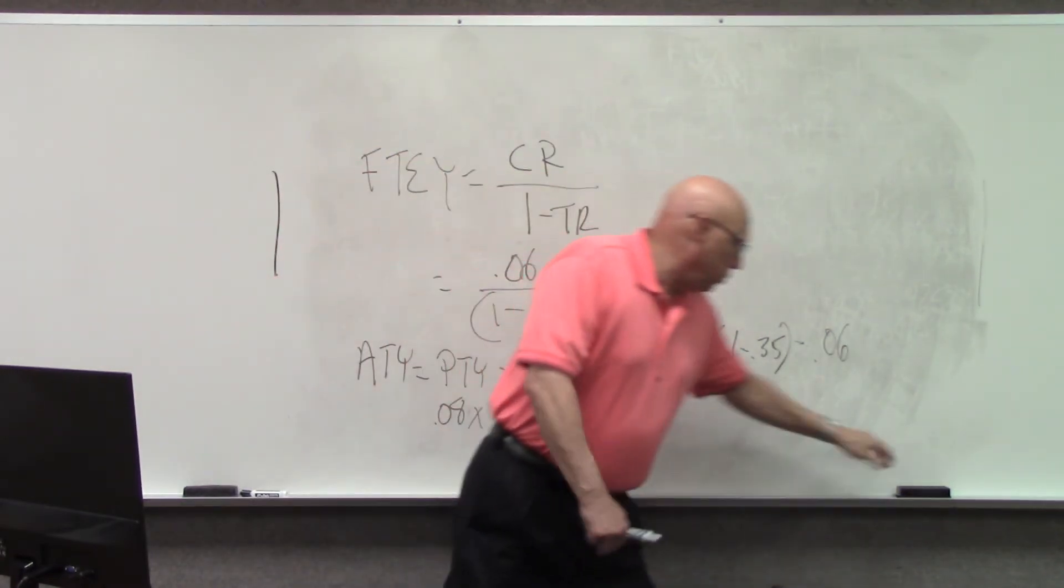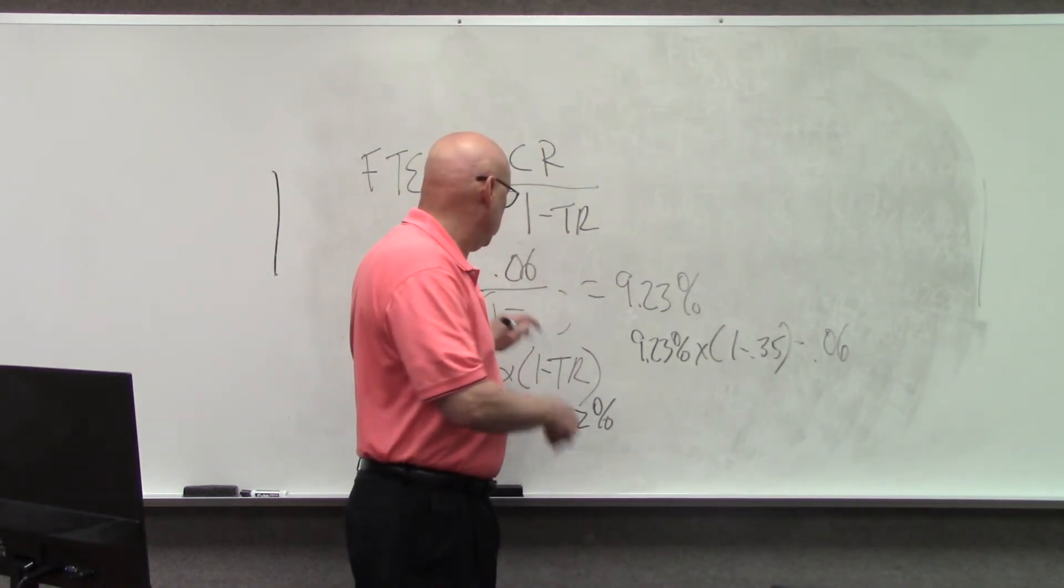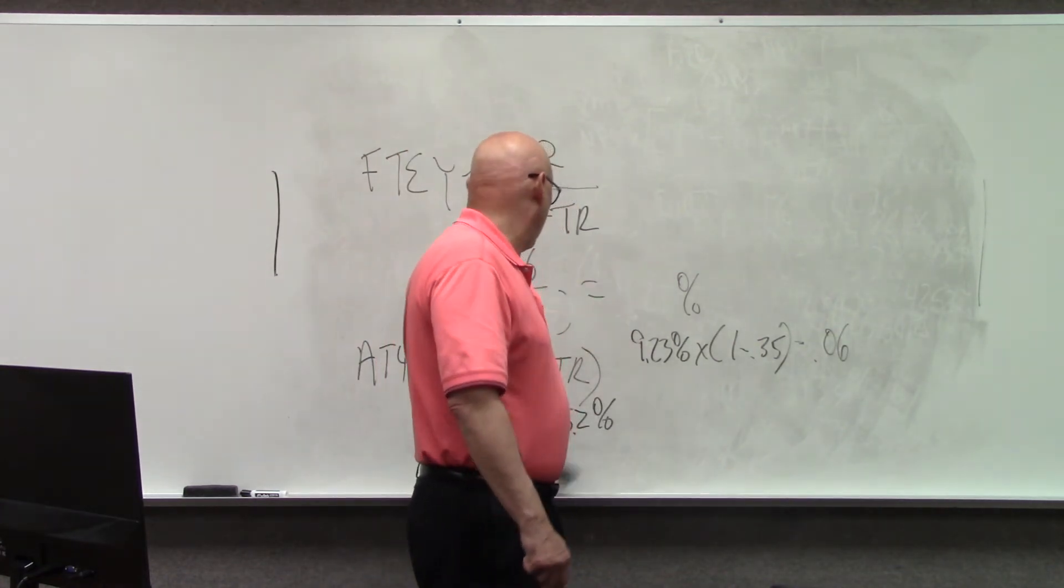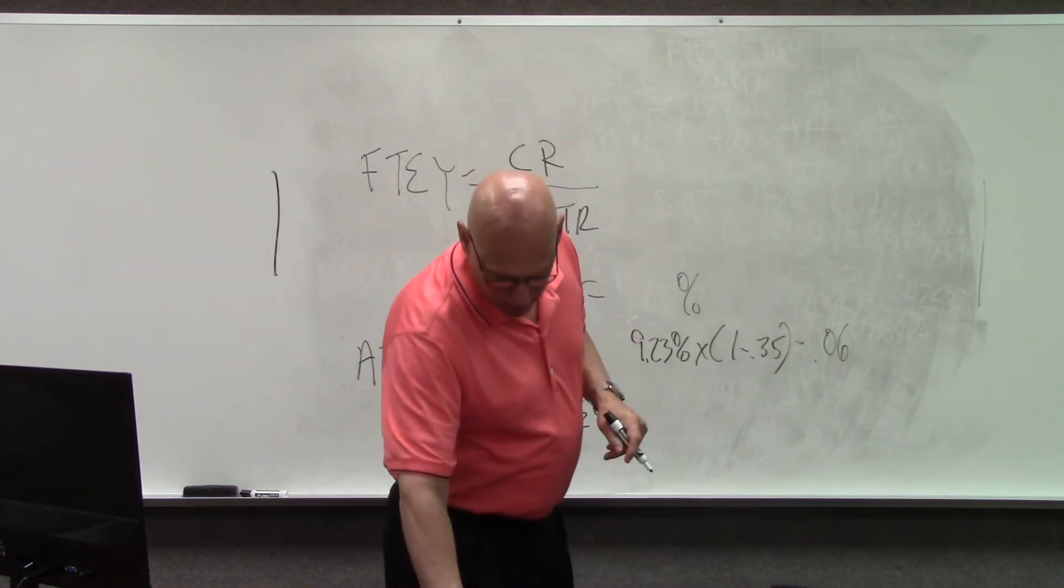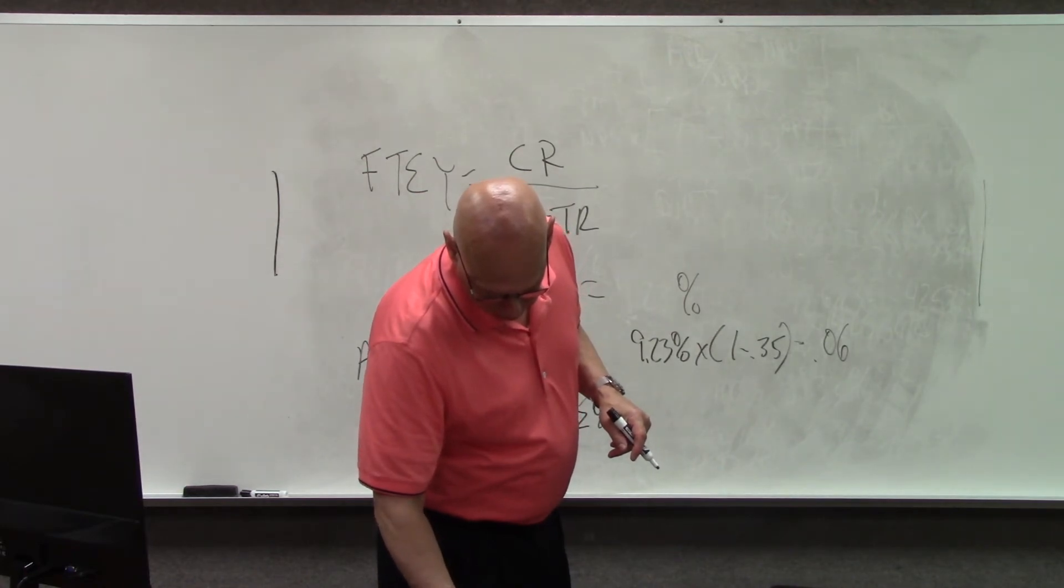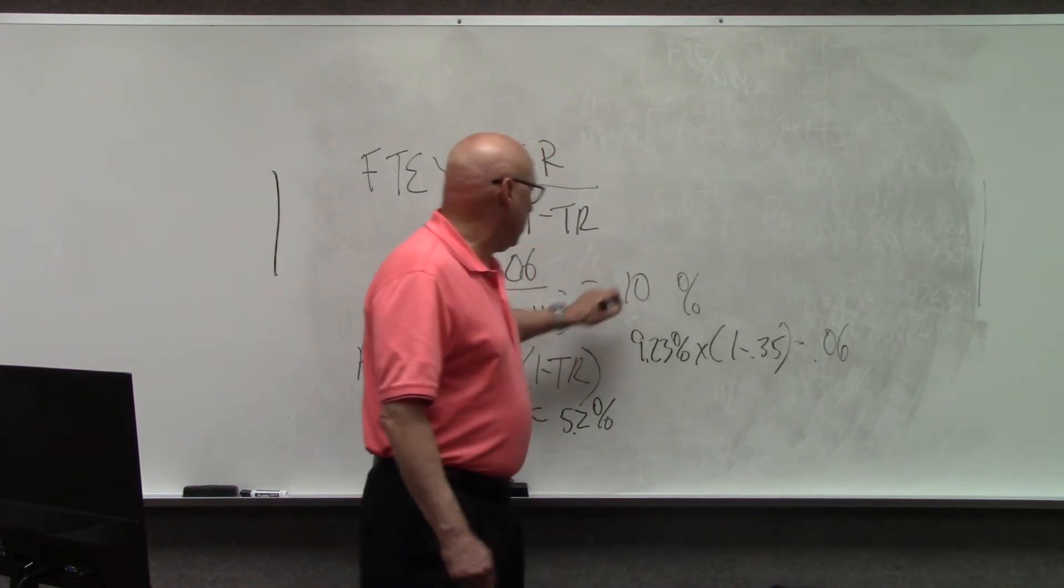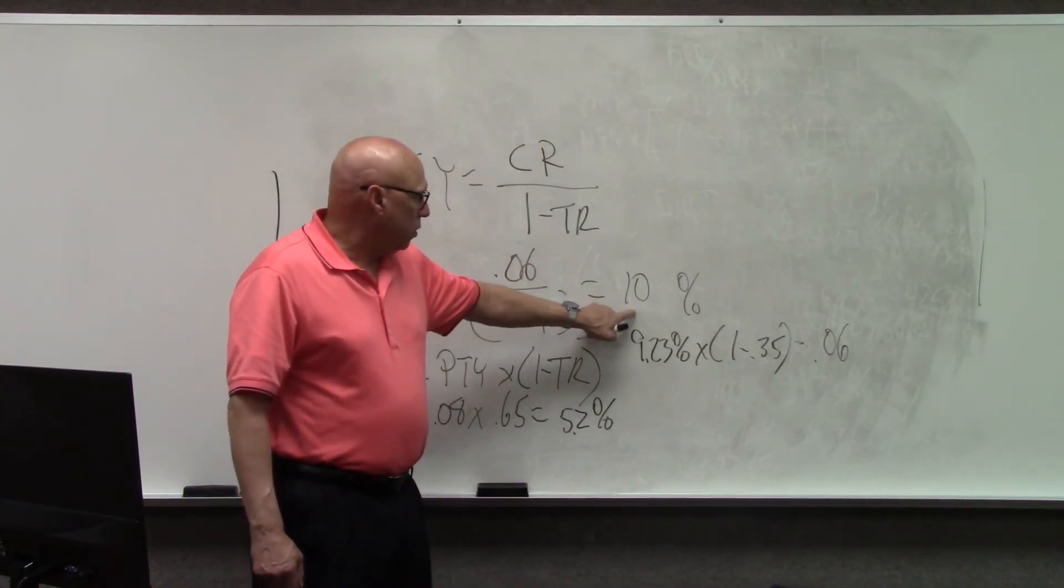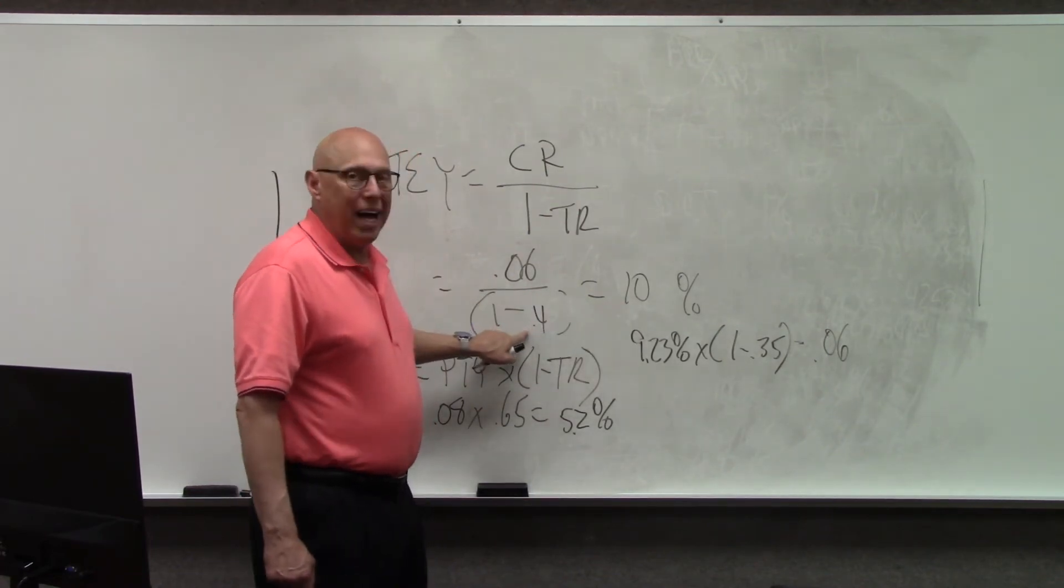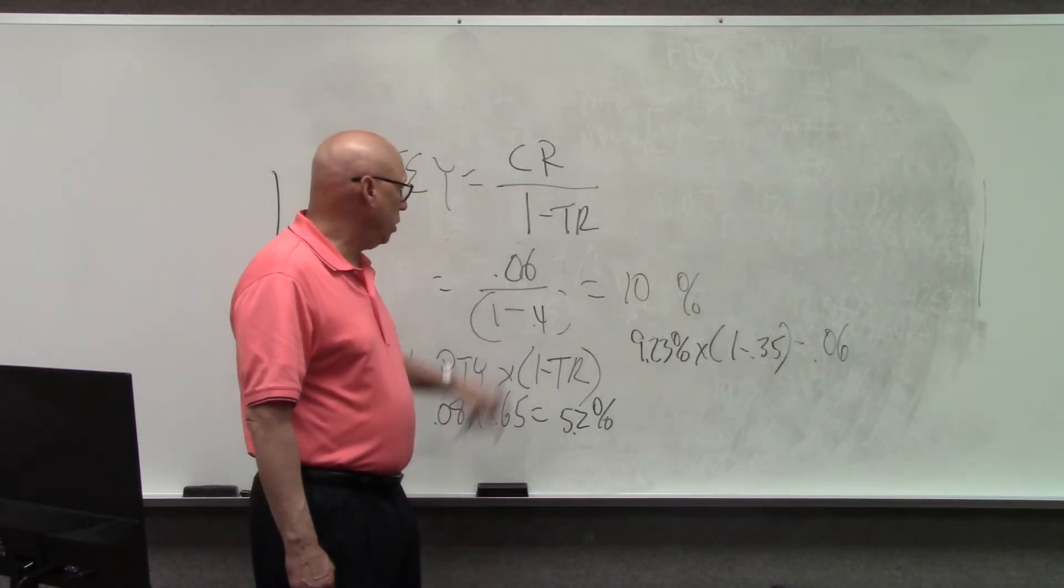Let's say your marginal rate is 40%. You divide 0.06 by 0.6 and I think it's 10%. Yeah, 10%. Your tax rate goes up. The pre-tax yield is worth more. So, the higher the tax rate is for the investor, the more the tax-free yield is worth.